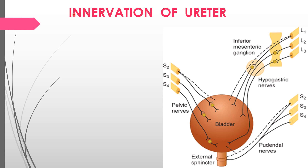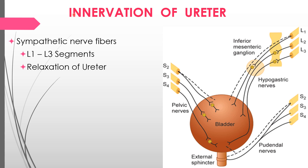Innervation is by three nerves: sympathetic, parasympathetic, and somatic. The sympathetic nerve is the hypogastric nerve, supplied by the lumbar segments L1, L2, and L3, which causes relaxation of the bladder and contraction of the internal sphincter.